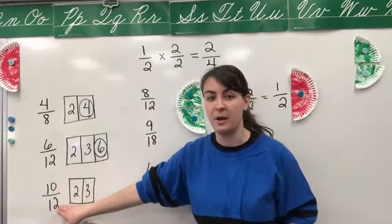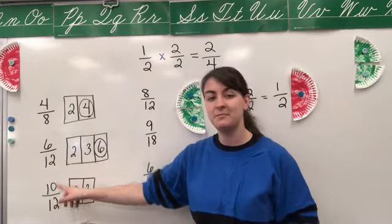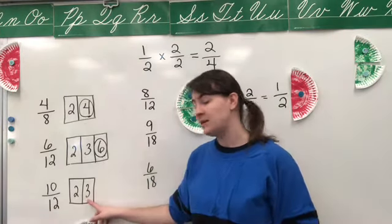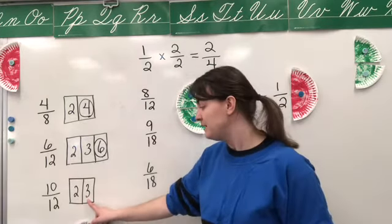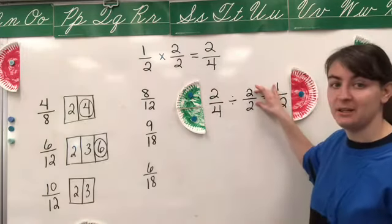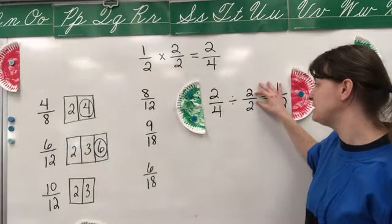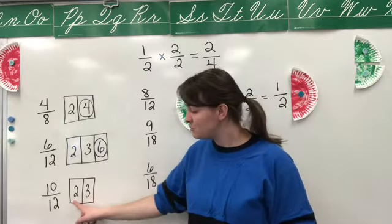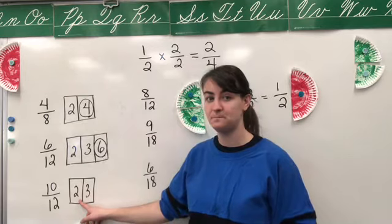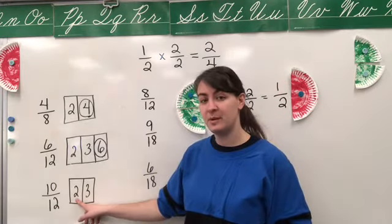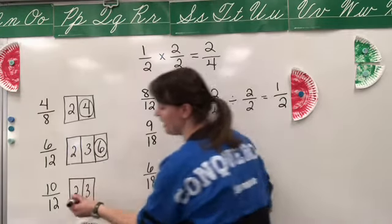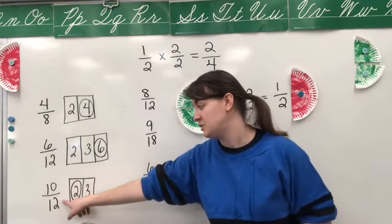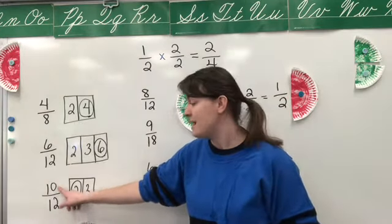How about 10/12? Let's start with the larger number — three. Can 10 be divided by three evenly with no remainder? It can't. Can 12 be divided by three evenly? Yes, but when I reduce fractions, the numerator and the denominator I divide by have to be equal to one, so it has to be the same number top and bottom, and I can't divide 10 by three. So three doesn't work. Does two work? Can 10 be divided evenly by two? Yes. Can 12 be divided evenly by two? Yes. So for 10/12, two is the option to go with.